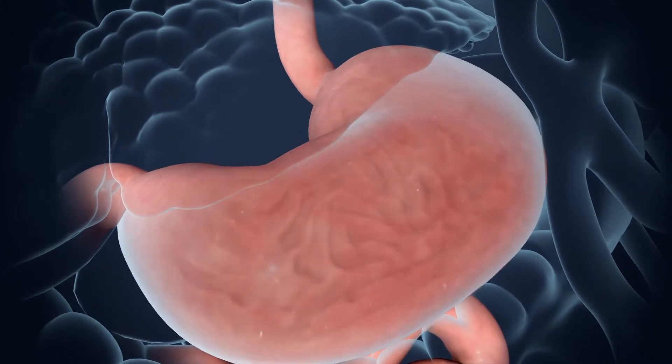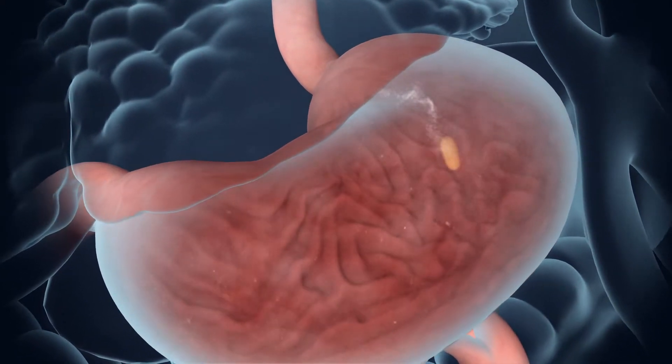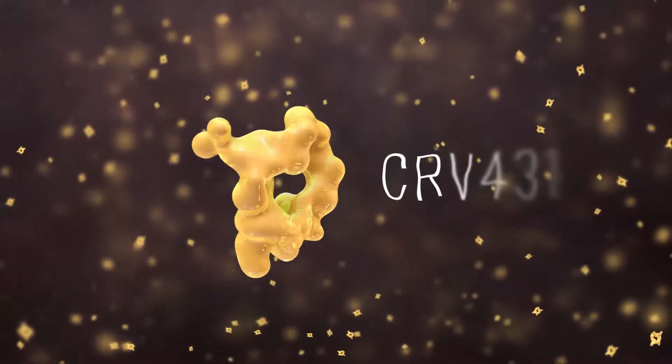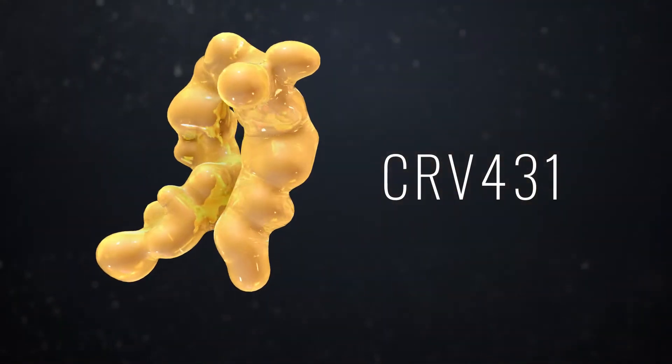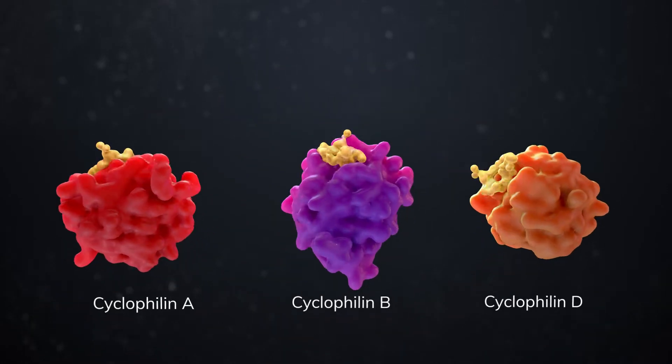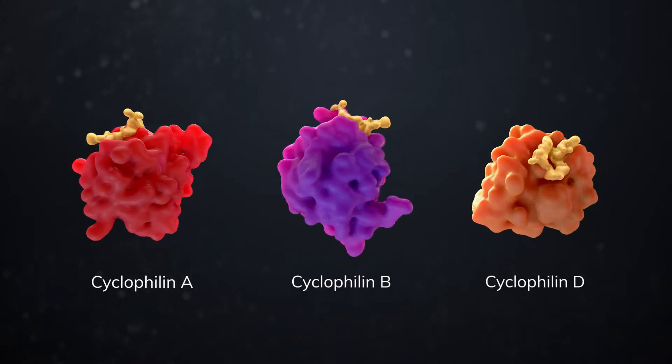Hepion's CRV431 is an oral drug candidate for NASH and other chronic liver diseases. CRV431 binds to multiple forms of cyclophilin which results in blocking multiple stages of the disease.